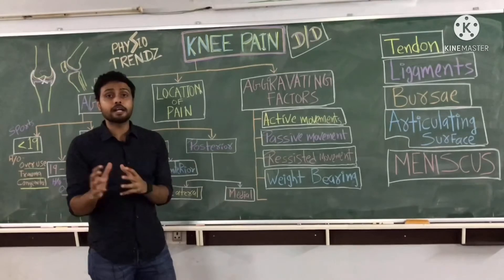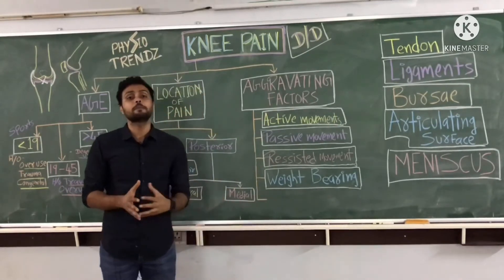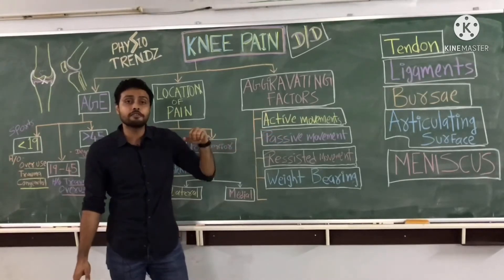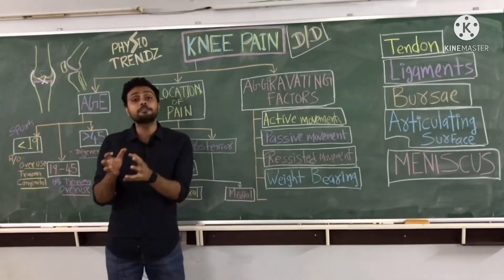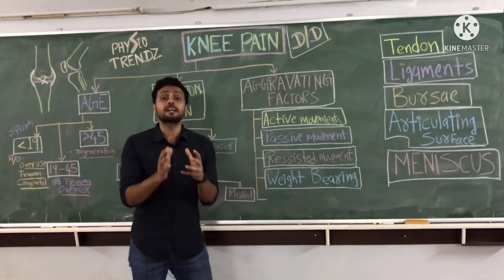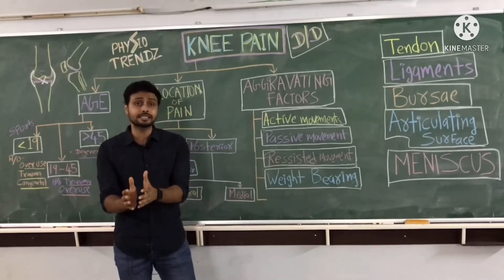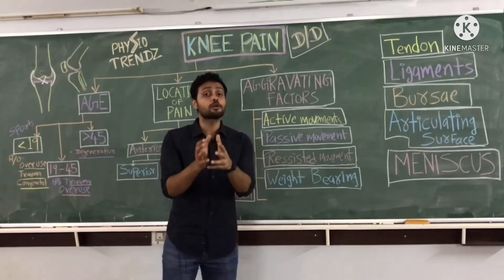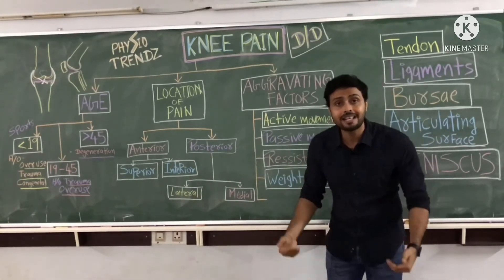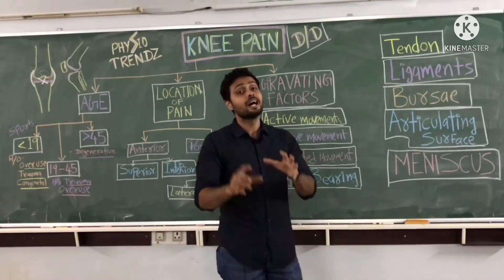The next way of differentiating conditions is through aggravating factors. As in normal assessment, we perform active, passive, and resisted movements. If during active knee flexion or extension the patient complains of pain, more of the active structures like muscles and tendons are involved. If pain occurs during passive movement, passive structures like ligaments are more likely involved. If pain increases during resisted activities, active structures like muscles and tendons are involved. Weight bearing is an additional factor for the knee, and if the patient complains of pain during weight bearing, the articulating surfaces or meniscus are most likely affected.